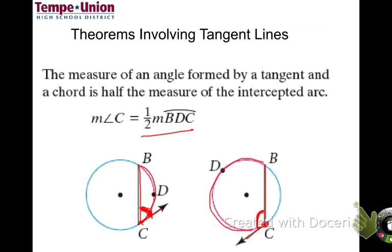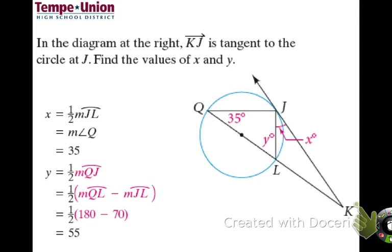Finding x: there's an inscribed angle of 35 degrees, and the inscribed angle is one-half of the arc it intercepts, so the intercepted arc is 70 degrees. Then x is the angle formed by the chord and tangent, which equals one-half of its intercepted arc. Since the arc is also 70 degrees, x equals 35 degrees.